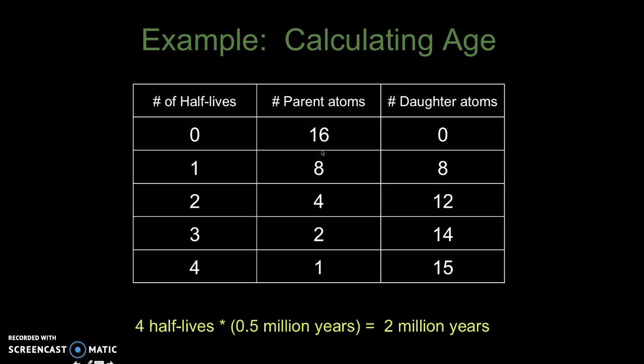After two half-lives, the remaining parent, we divide it by 2 to get 4 and we send 4 over to the daughter side. After the third half-life, divide 4 by 2 and then send 2 over, so 12 plus 2 is 14. And the last one for the fourth half-life, divide 2 by 1 and that means we send 1 over. So now we're down to the ratio we had before, which is 1 to 15.